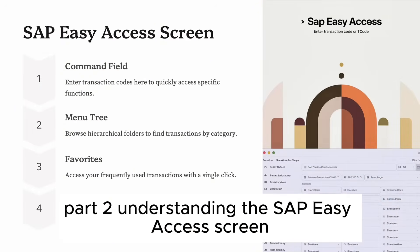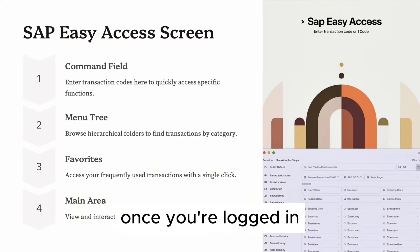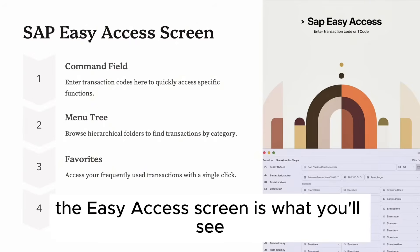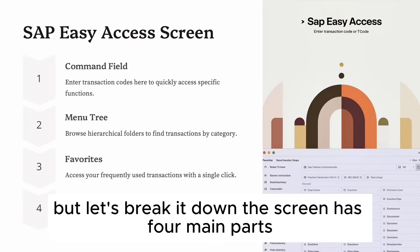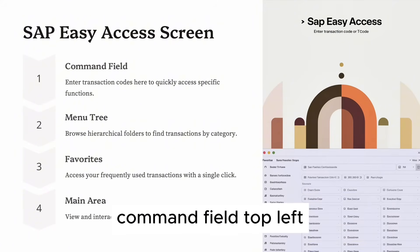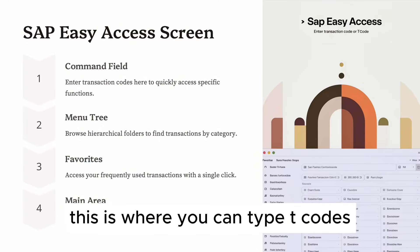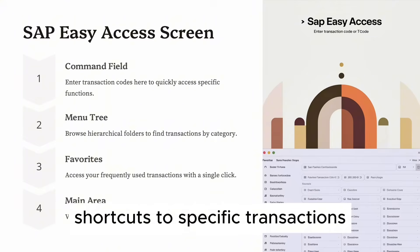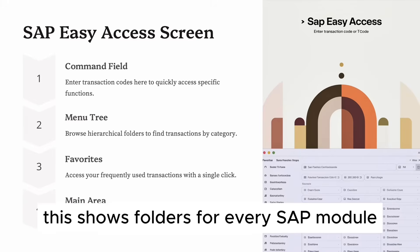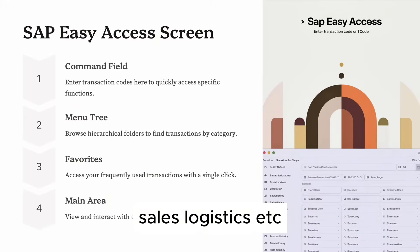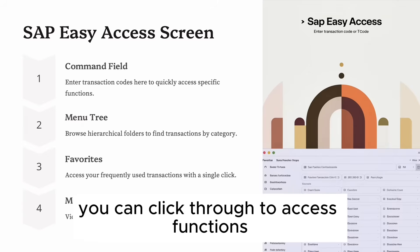Part 2: Understanding the SAP Easy Access screen. Once you're logged in, the Easy Access screen is what you'll see. It may look complex at first glance, but let's break it down. The screen has four main parts. Command field (top left) — this is where you can type T-codes, shortcuts to specific transactions. Menu tree (left panel) — this shows folders for every SAP module: sales, logistics, etc. You can click through to access functions.